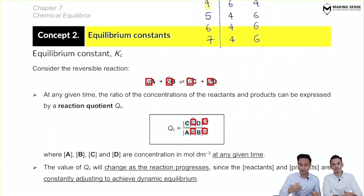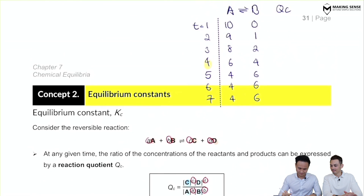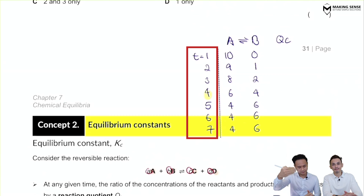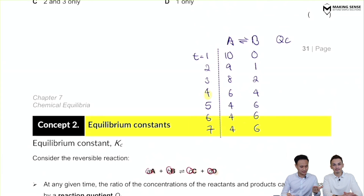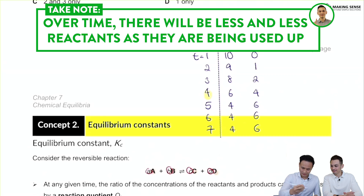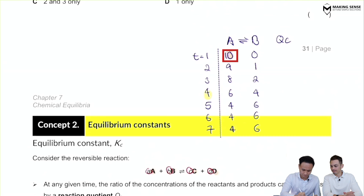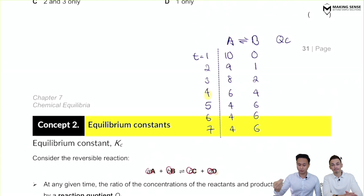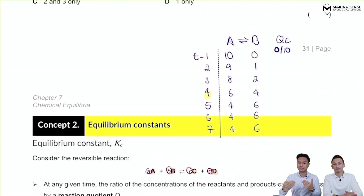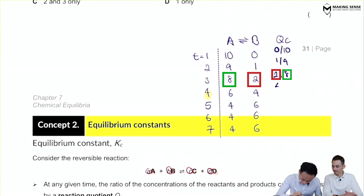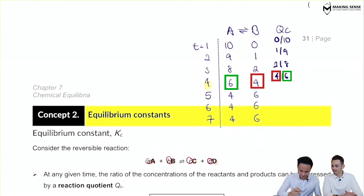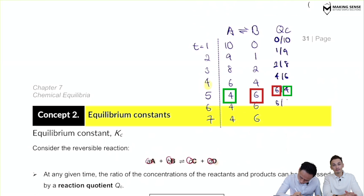To better illustrate this, consider the simpler reaction A becomes B. Time goes from one to seven minutes. As the reaction proceeds, we start with 10 moles of A and eventually 4 moles of B, while the concentration of product B increases with time. Writing the reaction quotient Qc — concentration of products divided by concentration of reactants — we get 0/10 at one minute, then 1/9, 2/8, 4/6, and so on.